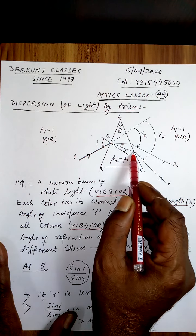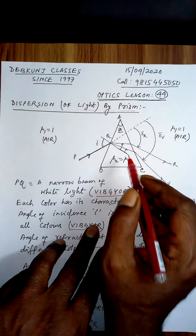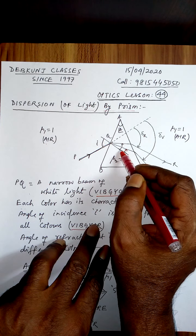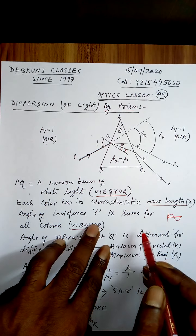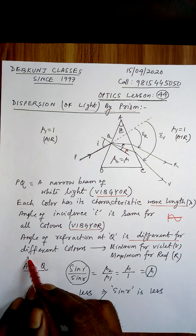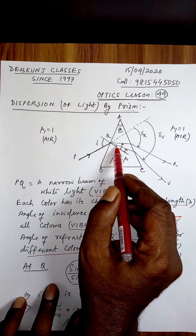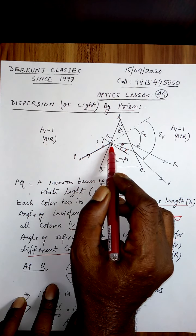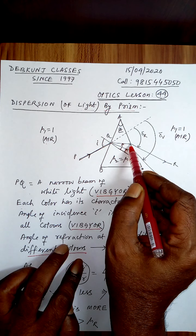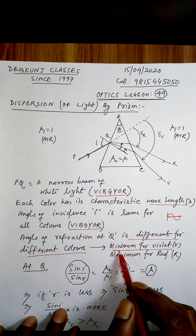The violet light bends more, and this is the path along which the red light travels. This angle of refraction is the angle of refraction for violet, and this is the angle of refraction for red. The angle of refraction at Q is different for different colors — it is minimum for violet and maximum for red.